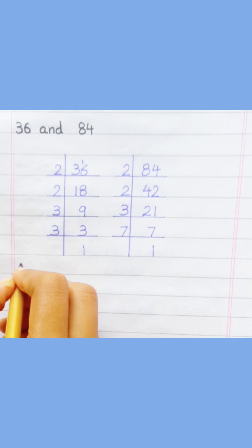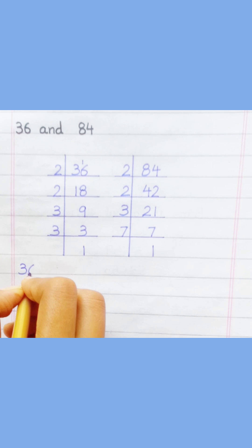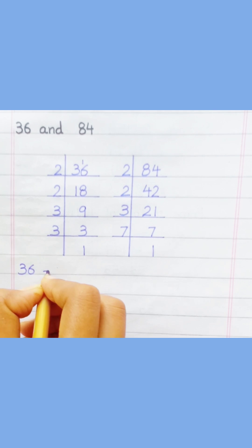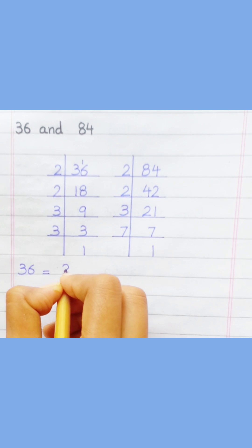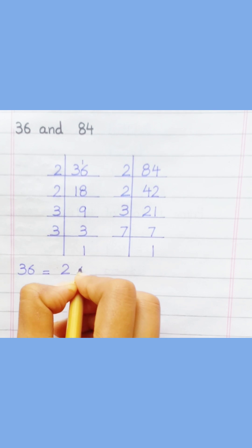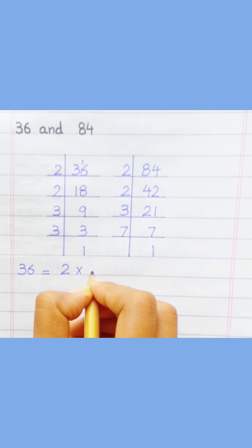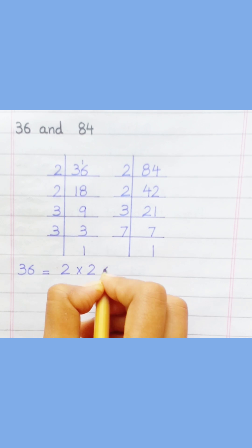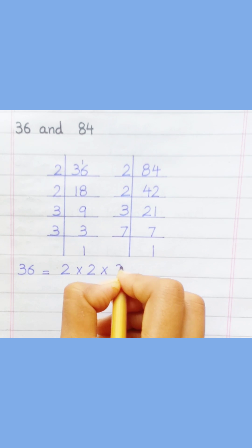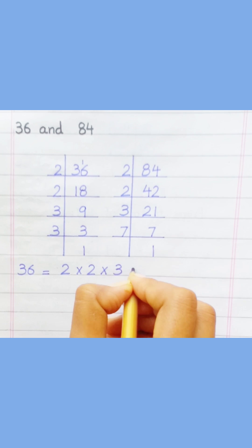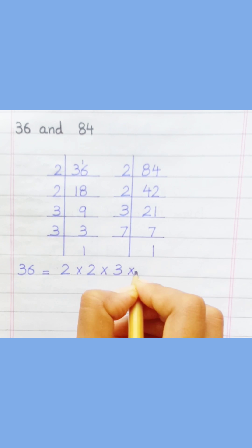Thirty-six equals two multiply two multiply three multiply three.